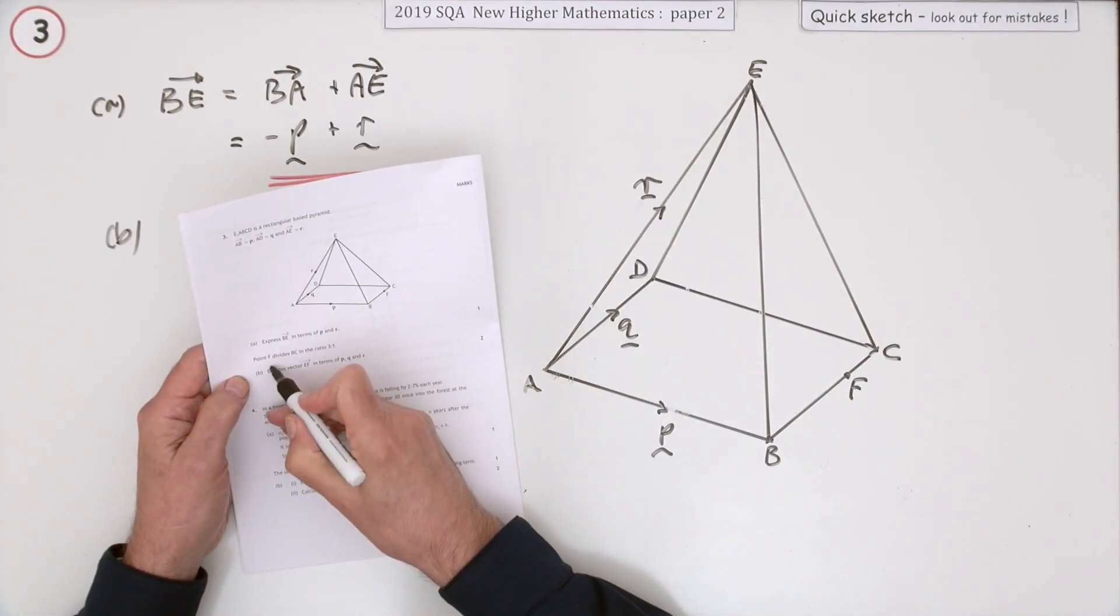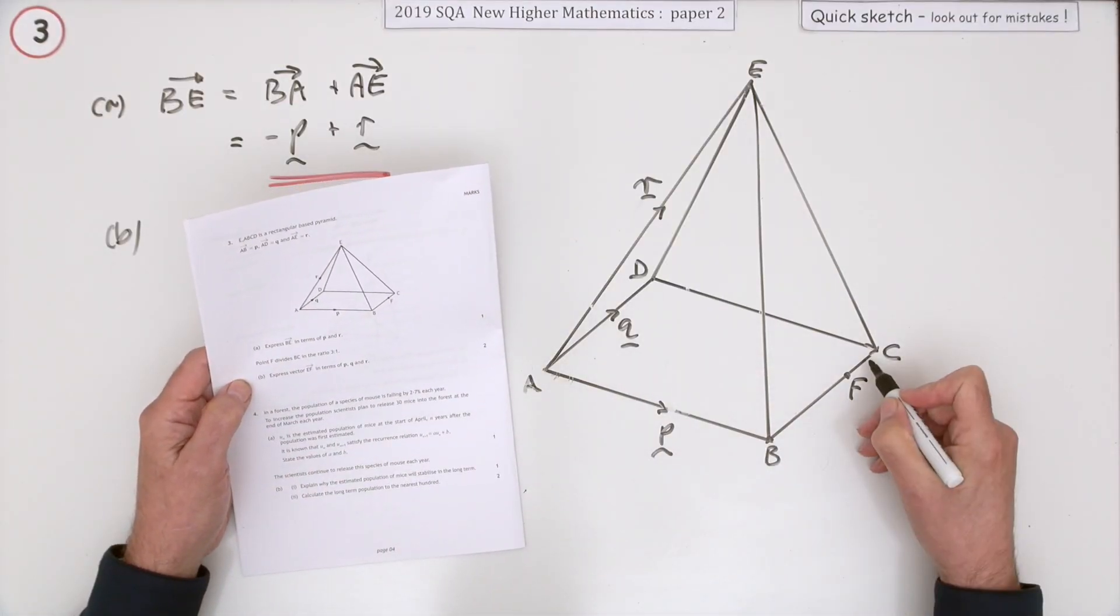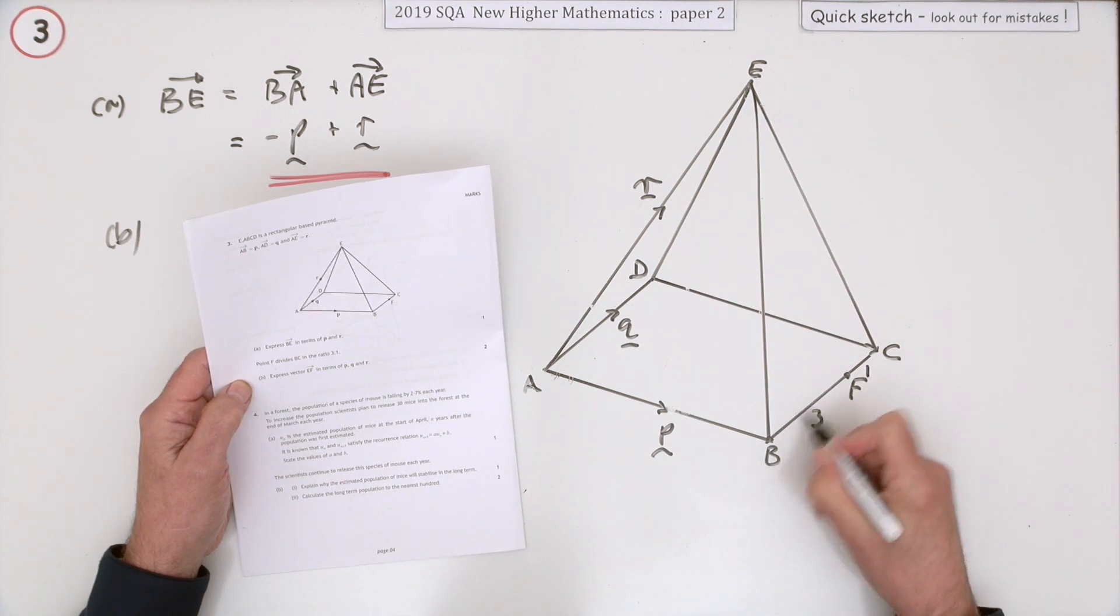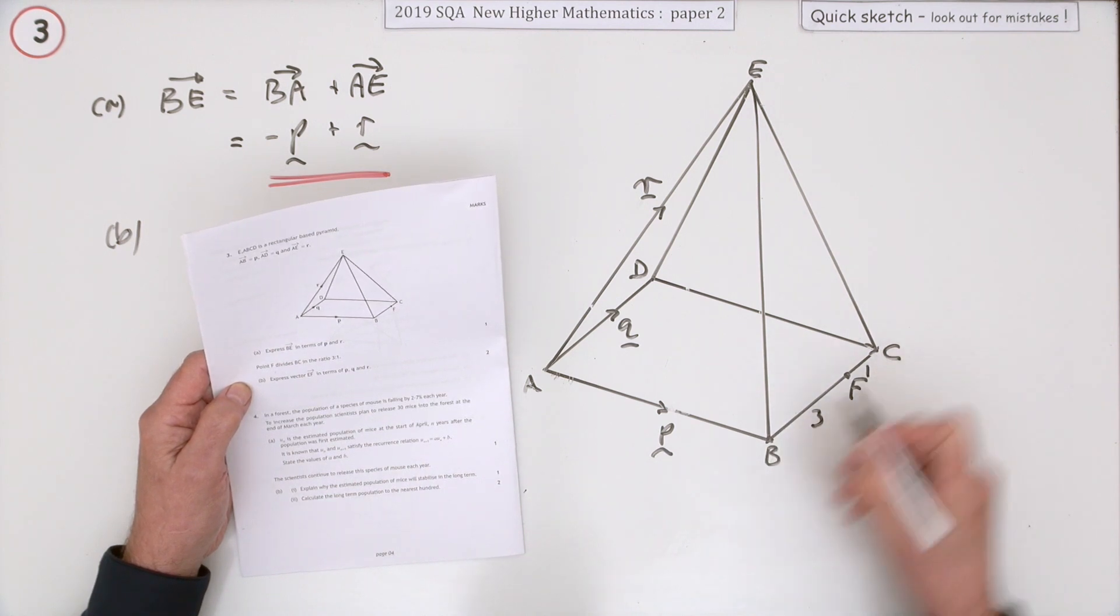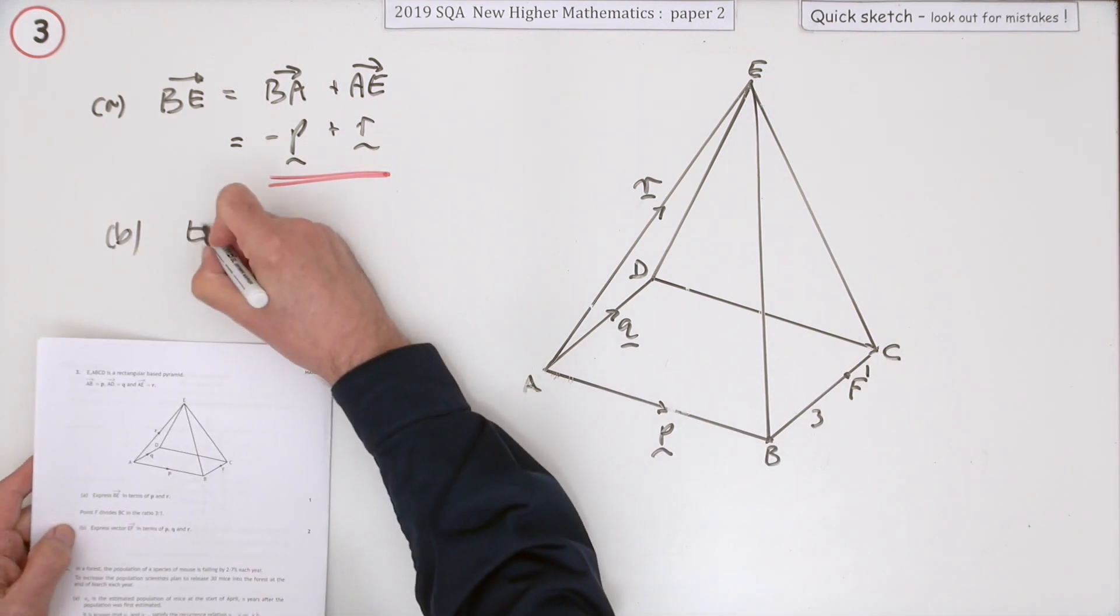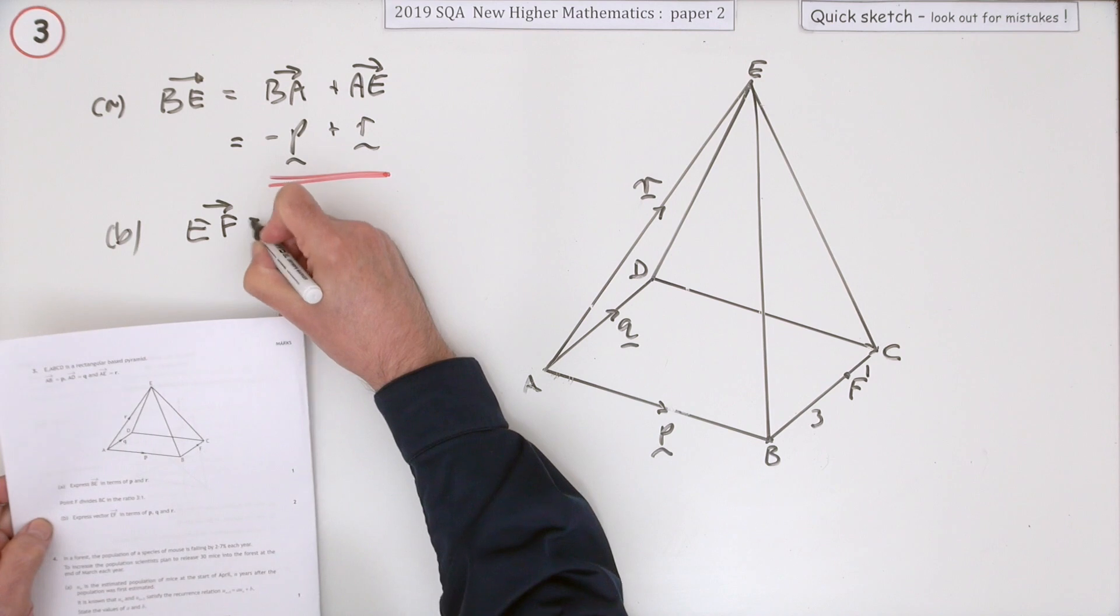Now part B: F divides BC in the ratio of three to one, three parts to one part. In other words, that's three out of the four parts, three quarters of the way along. Express EF in terms of all three vectors.